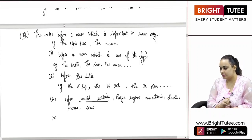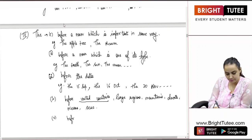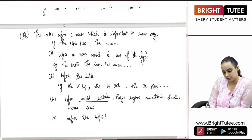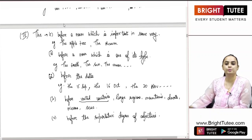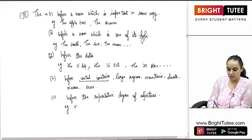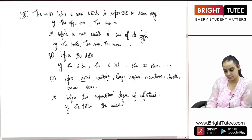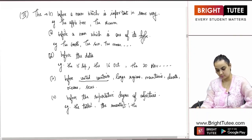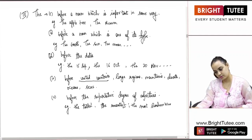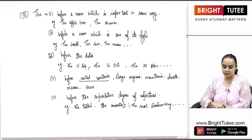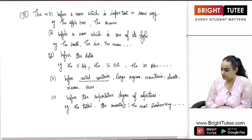The next usage: we always use THE before the superlative degree of adjectives. For example: the tallest, the smartest, the most hardworking, and so on and so forth. Something which is in the superlative form — we use THE before it.